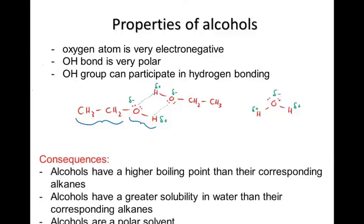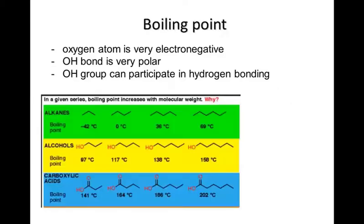Now, there are several important consequences that follow from this polarity. First of all, alcohols have a higher boiling point than alkanes that have the same number of carbons in them. This is because the hydrogen bonding is stronger, and so it requires more energy to separate the molecules. It also means that they have a greater solubility in water than the corresponding alkanes, and this has to do with hydrogen bonding as well. And it means that the alcohols are a polar solvent and are able to dissolve a wide range of substances. So let's look at this in a bit more detail.